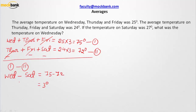The difference is 3 degrees between Wednesday and Saturday. The temperature on Saturday is given as 27 degrees, so the temperature on Wednesday is going to be 30 degrees. Another way to think about this: the average temperature on Wednesday, Thursday, and Friday is one more than the average on Thursday, Friday, and Saturday. So if the temperature on Saturday is 27 degrees, the temperature on Wednesday is going to be 3 more than Saturday — you don't even have to fully solve this problem.